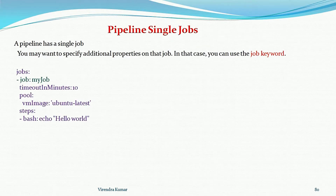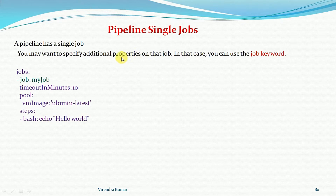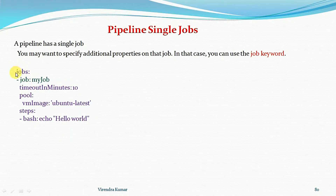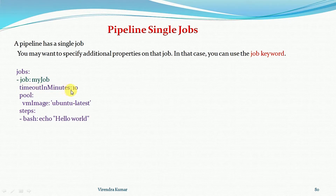A pipeline has at least one single job — either implicit or explicit. When a job has additional properties to define, you use the `job` keyword. Under the `jobs` keyword, which is an array, you define each job with a hyphen, then `job:`, then the name of your job. Properties like `timeoutInMinutes` are available here.